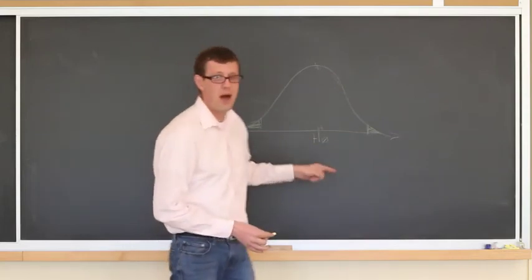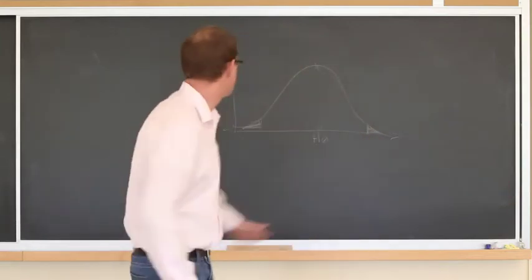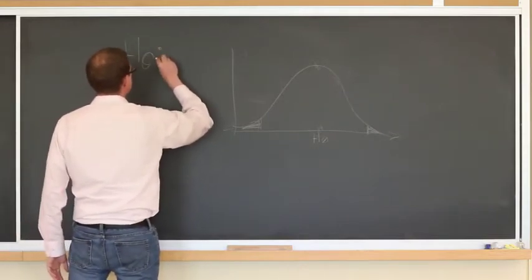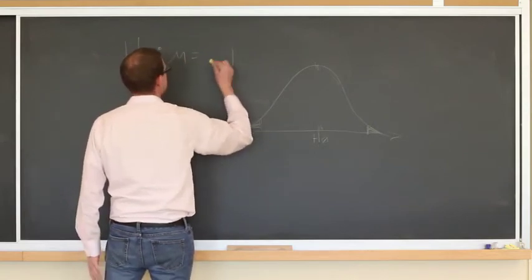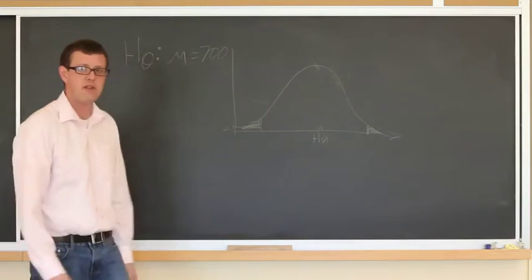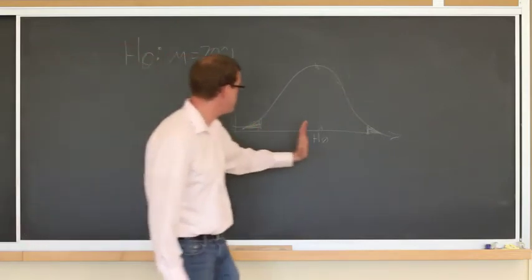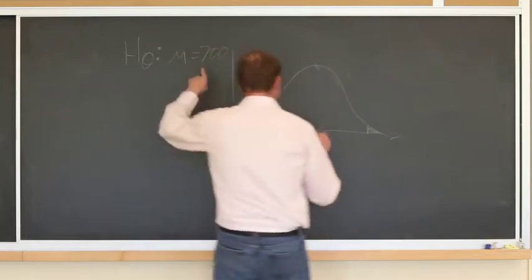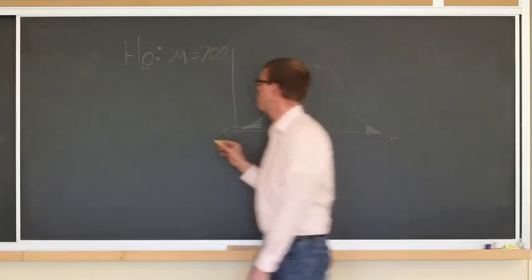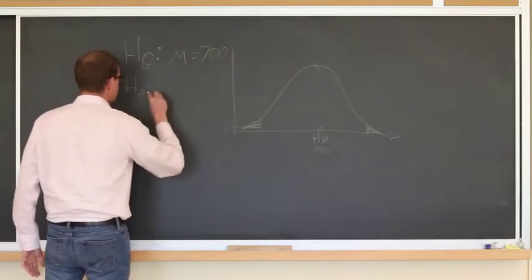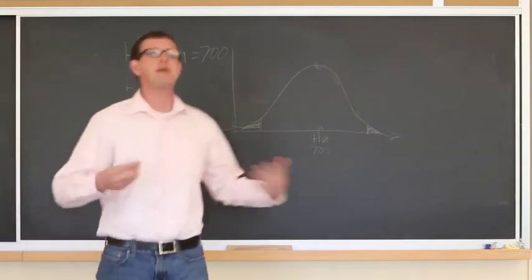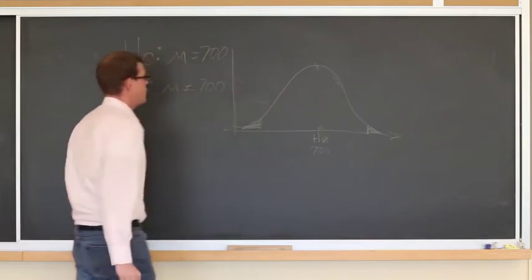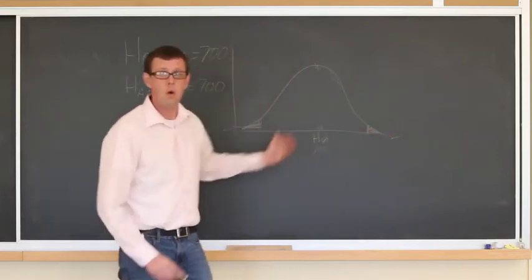What type of null hypothesis is associated with a two-tailed test? The null hypothesis H-naught — let's go with a one-sample t-test — that the mean is equal to some value, let's say 700. This is two-tailed. It's saying that what's extreme would be anything that is either greater than 700 or less than 700. The alternative hypothesis represents the extreme things we're looking for — values not equal to 700, which could be above or below the null hypothesis.